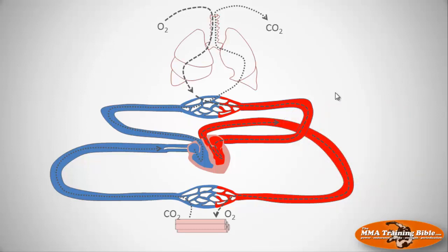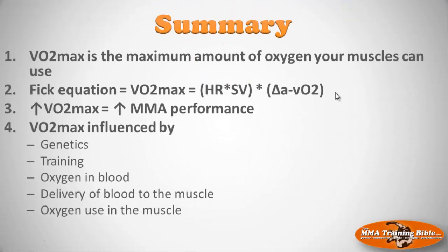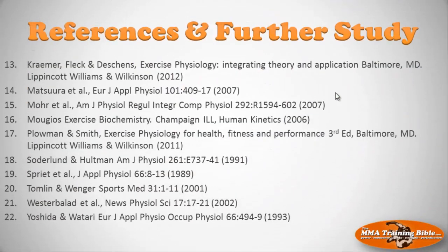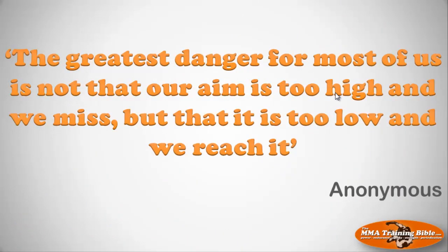To summarize: VO2 max is the maximum amount of oxygen your muscles can use, defined by the Fick equation as cardiac output multiplied by the AVO2 difference. A higher VO2 max is associated with better MMA performance. It is influenced by genetics, the type of training you do, the amount of oxygen in your blood, delivery of blood to the muscle, and oxygen use inside the muscles. References for further study are provided, and I look forward to seeing you in the next video.